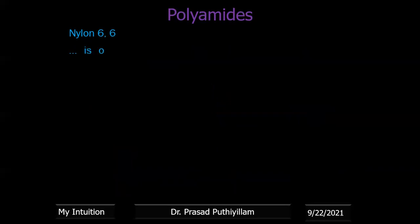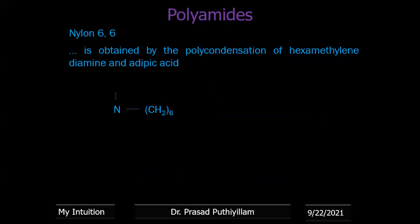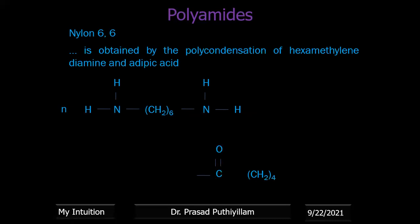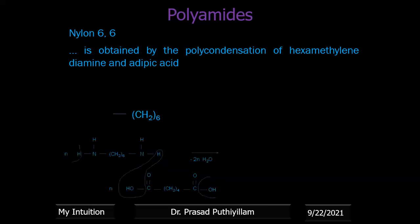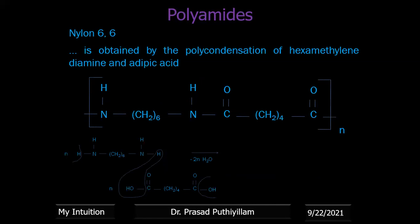Nylon 6-6 is obtained by polycondensation of hexamethylenediamine and adipic acid. Hexamethylenediamine has 6 methylene groups (CH2)6 with NH2 groups on both ends. Adipic acid is HOOC–(CH2)4–COOH. Condensation occurs on either side, and the resulting repeating unit contains the CO-NH amide group. The first monomer has 6 carbon atoms and the second also has 6 (4+2 carbons in adipic acid) — therefore it is nylon 6-6.